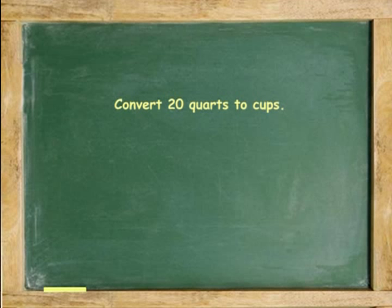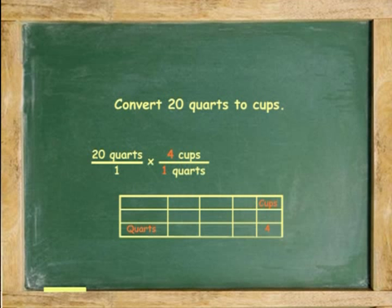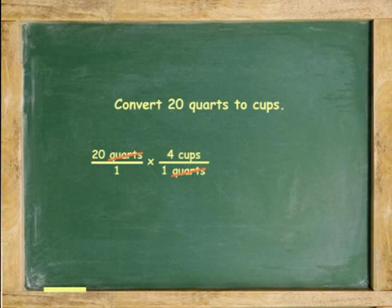Another example: Convert 20 quarts to cups. 20 quarts over 1 times 4 cups in 1 quart. Cancel the quarts. 20 times 4 is 80. 80 cups is the answer.